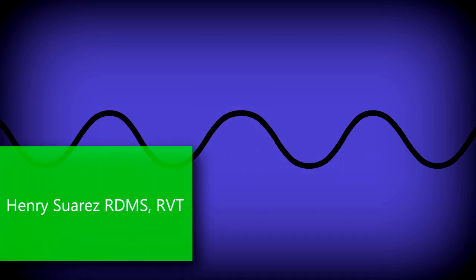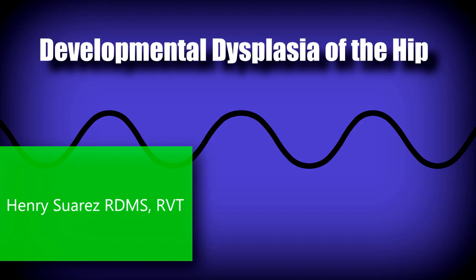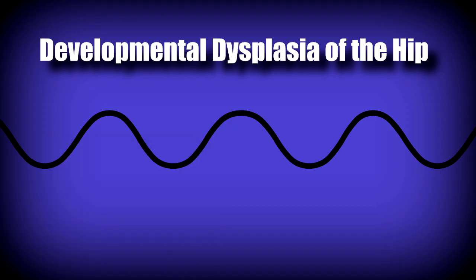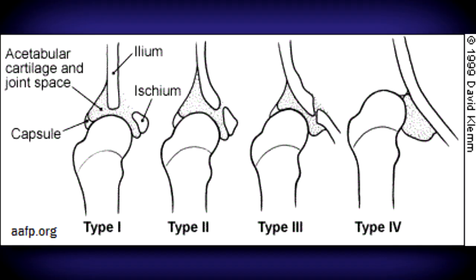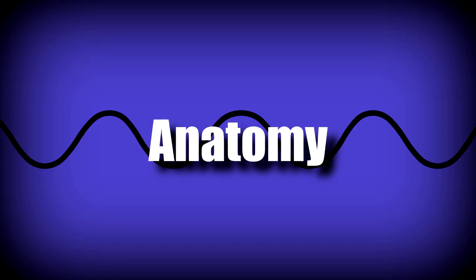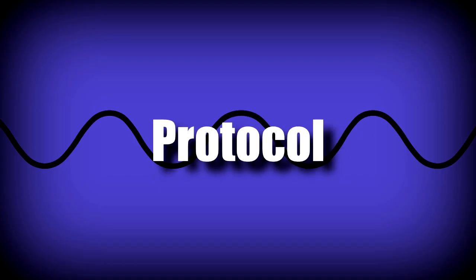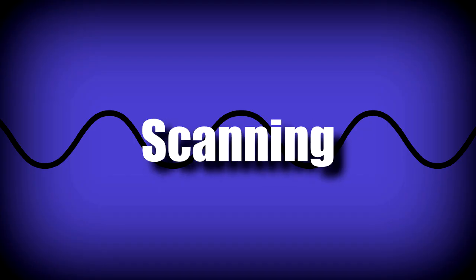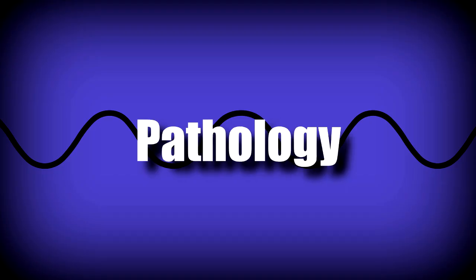Hello there everyone, Henry here. Today we're going to go over developmental dysplasia of the hip. Developmental dysplasia of the hip, or DDH, is a congenital malformation that either results in dislocation of the femoral head from the acetabulum or underdevelopment of the acetabulum. In this video, I'm going to go over briefly anatomy, the protocol and techniques of performing the ultrasound, and then at the end we'll go over some pathology.